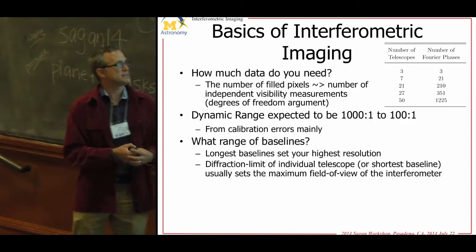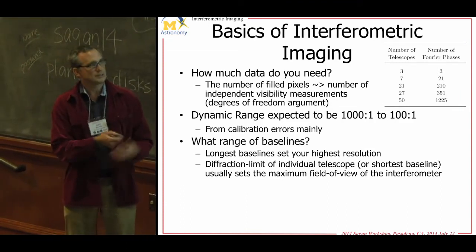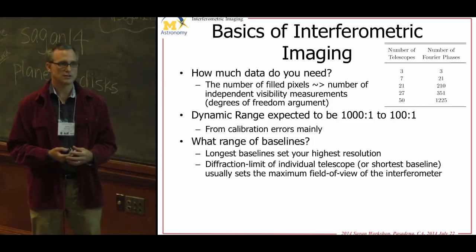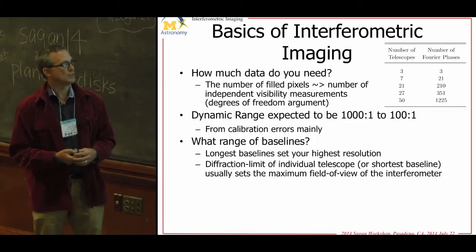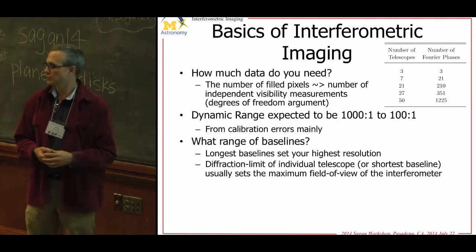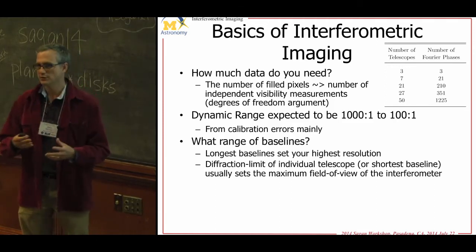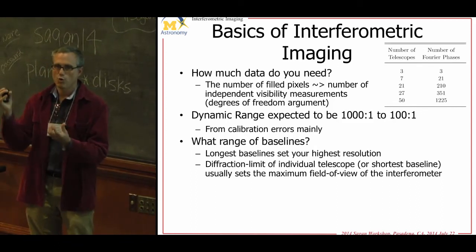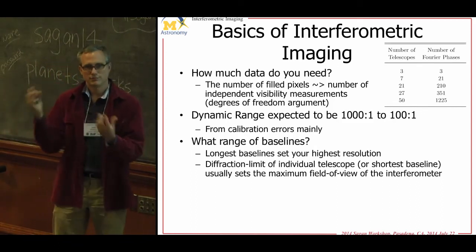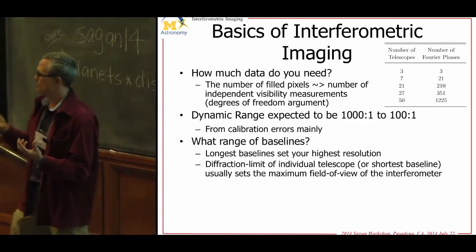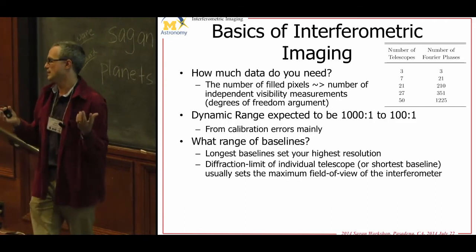The range of baselines: the longest baseline sets your resolution, and the shortest baseline or sometimes the aperture itself sets your lowest resolution. For long baseline interferometers, there is a field of view problem — a binary star at an arcsecond won't fully make it through your interferometer. It may partially get through and corrupt things but won't be fully characterizable because of these field of view limits.